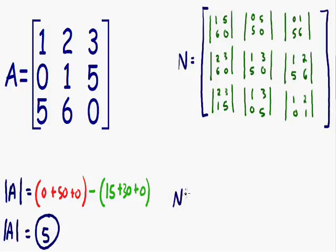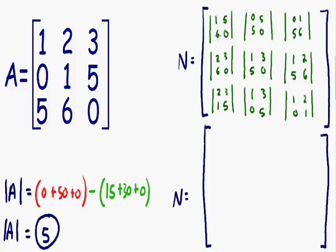Our next step is to replace matrix N with the determinants of all these 2 by 2 matrices. To find the determinant of a 2 by 2 matrix, multiply the main diagonal, then multiply the other diagonal, and subtract. For the top left: 1 times 0 is 0, and 5 times 6 is 30 — so 0 minus 30 equals negative 30. Top middle: 0 times 0 is 0, and 5 times 5 is 25 — so 0 minus 25 is negative 25. Top right: 0 times 6 is 0, and 5 times 1 is 5 — so 0 minus 5 is negative 5.